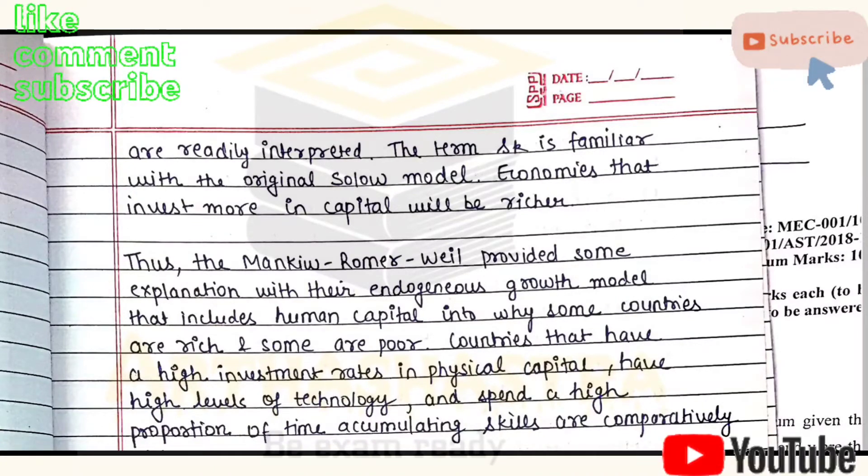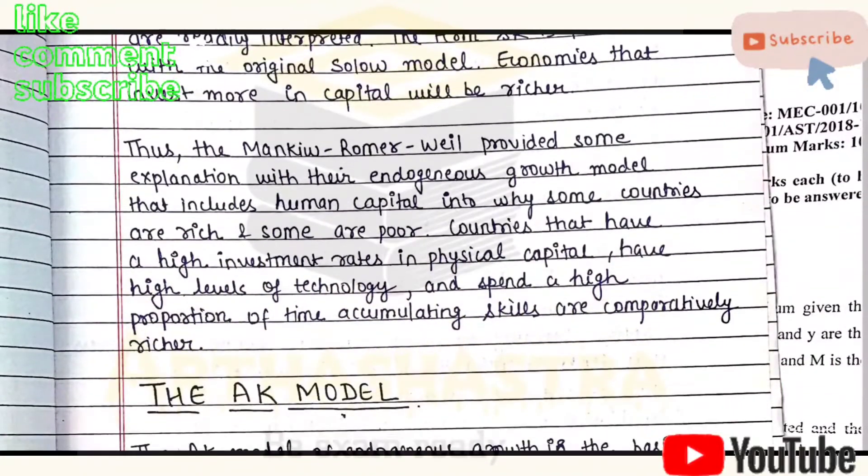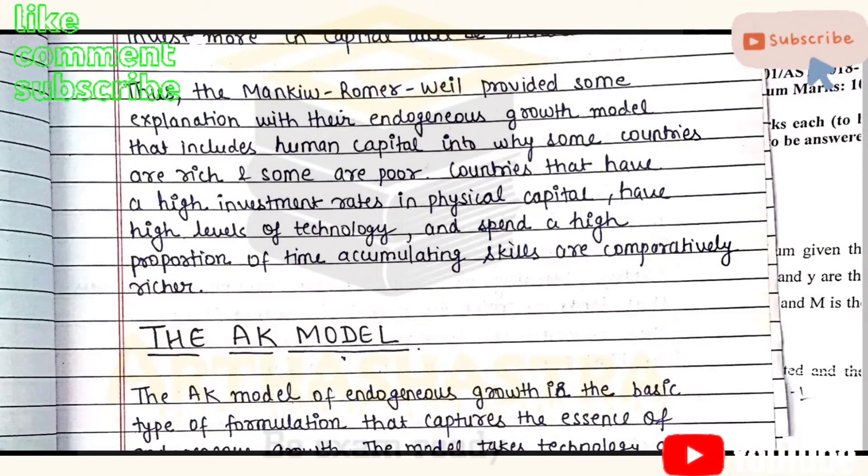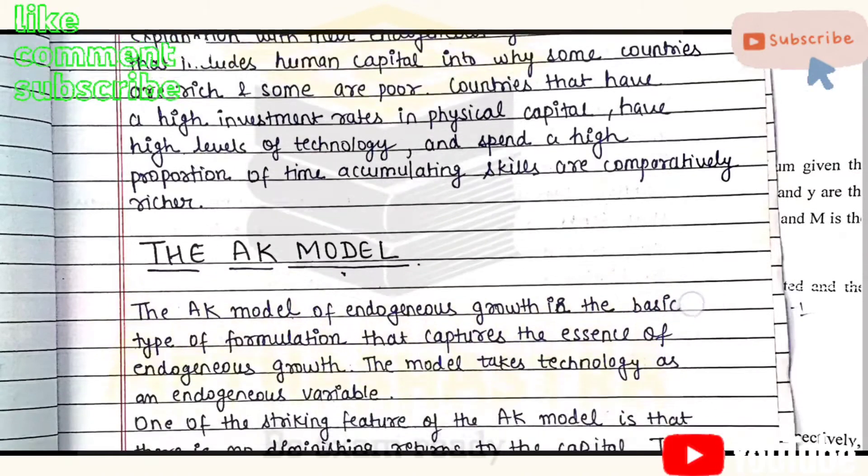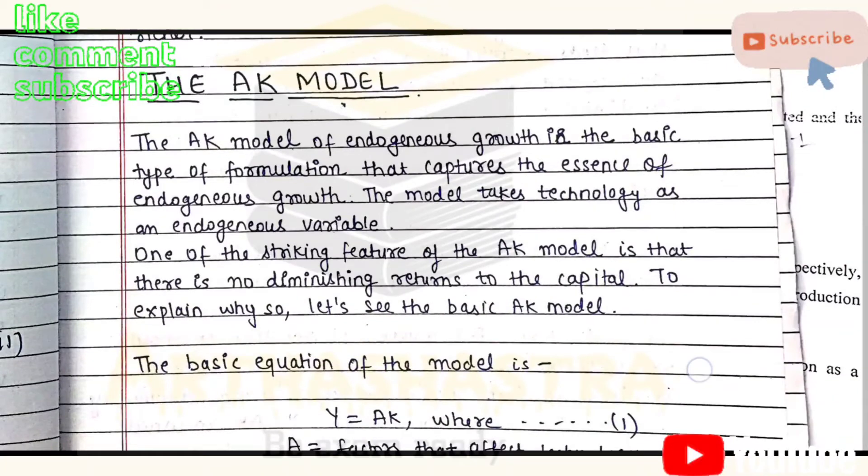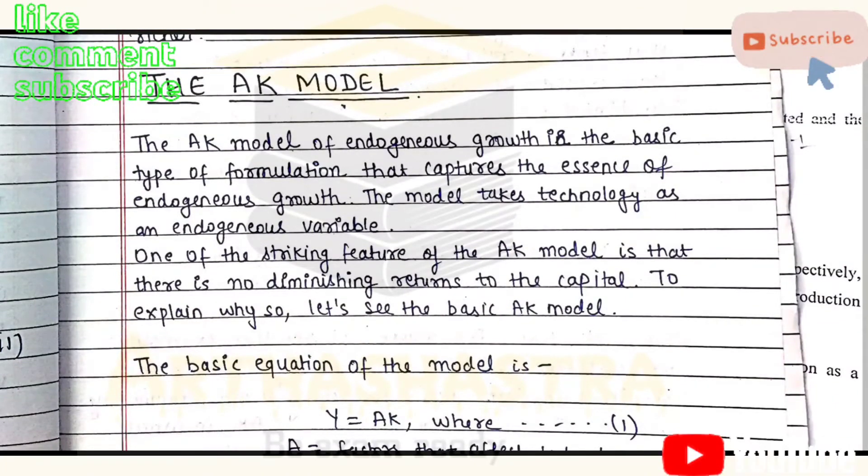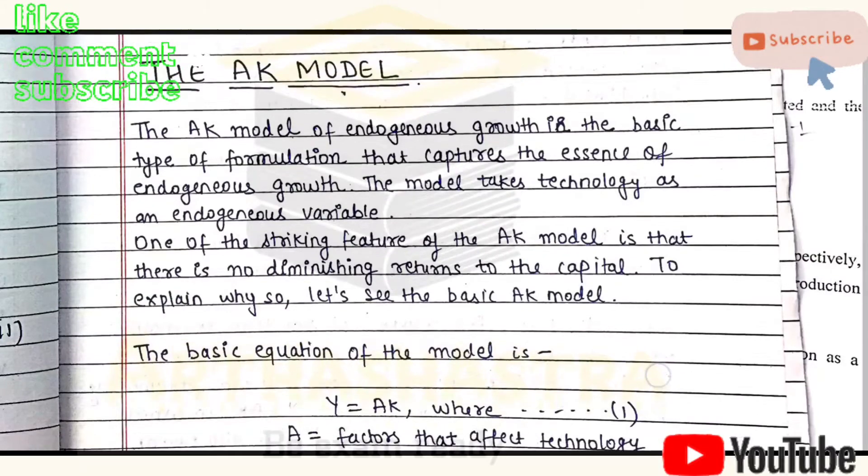As you see, we have completed the Mankiw-Romer-Weil model in the assignment. Now we are going to explain what the AK model has to say about the endogenous growth theory. The model treats technology as an endogenous variable. Endogenous variables are those variables which are determined within the model.